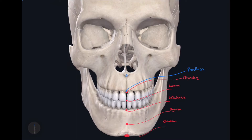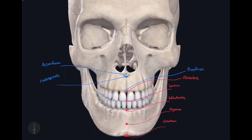Right here we have a landmark called the anterior nasal spine of the maxilla. On the inferior-most portion of this anterior nasal spine, this is called the nasospinale. The next craniometric point is just superior to the nasospinale — it's the very tip of the anterior nasal spine, which forms part of the anterior nasal aperture. The most anterior point of this protrusion is called the acanthion. The next craniometric point is the most superior and anterior point on the anterior nasal aperture, and this is called the rhinion.